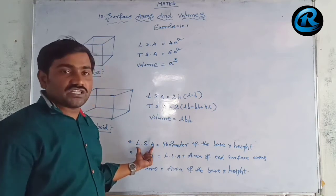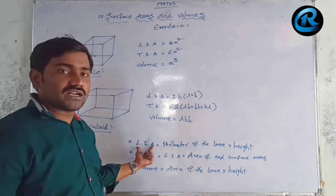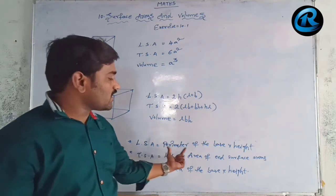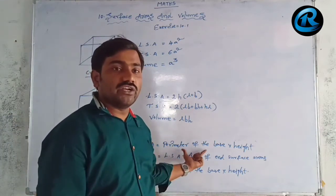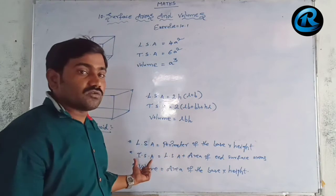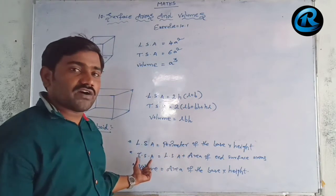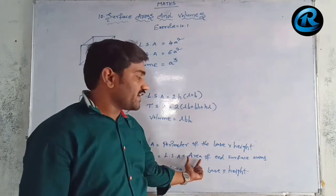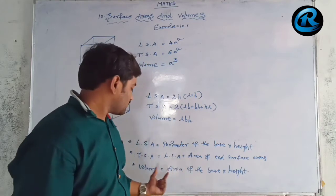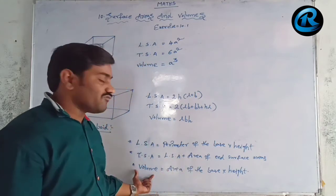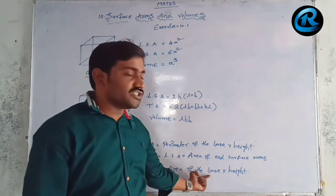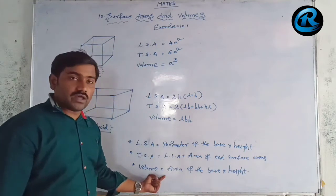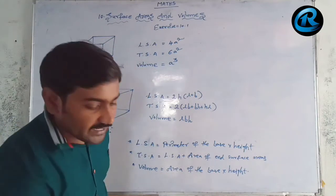Remember: to find the lateral surface area of any solid figure, the formula is perimeter of the base into height. The total surface area equals lateral surface area plus area of end surfaces. The volume formula is area of the base into height — this is the most important formula to remember.